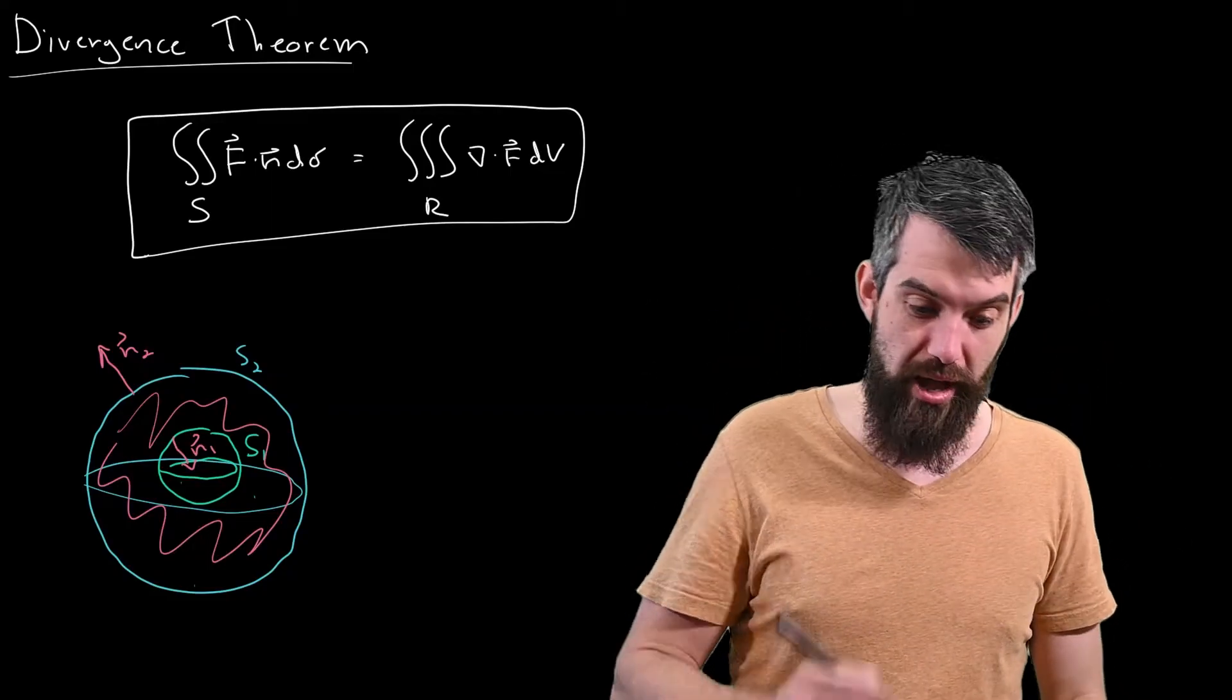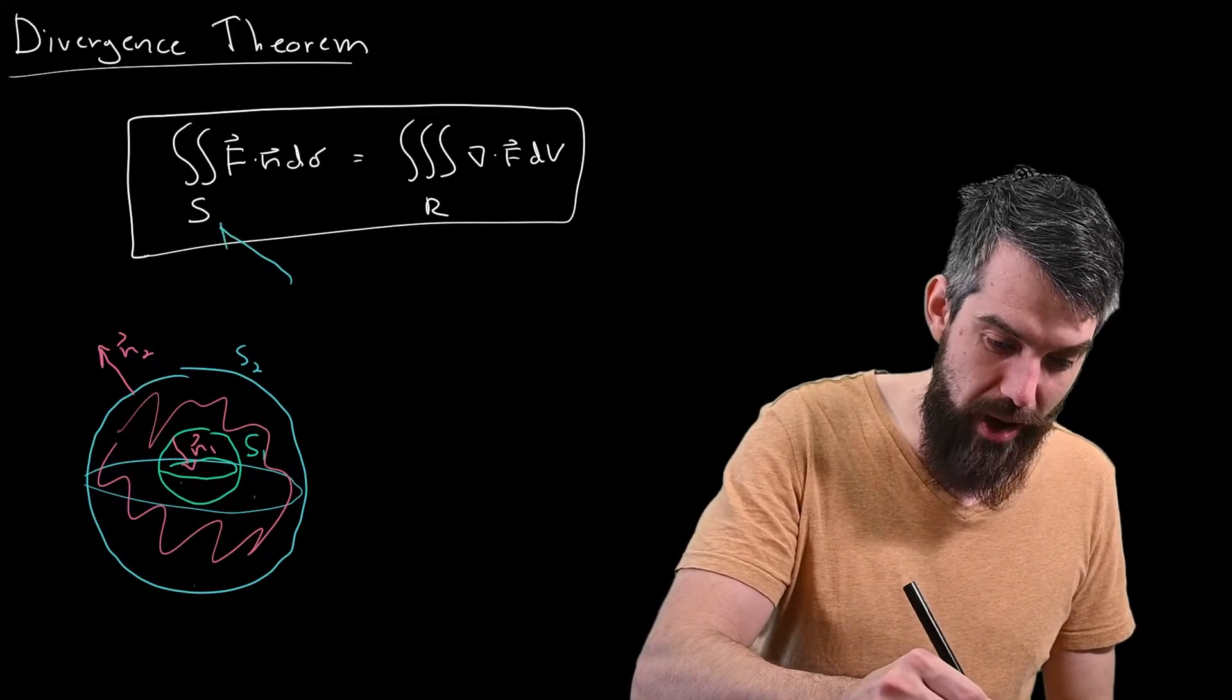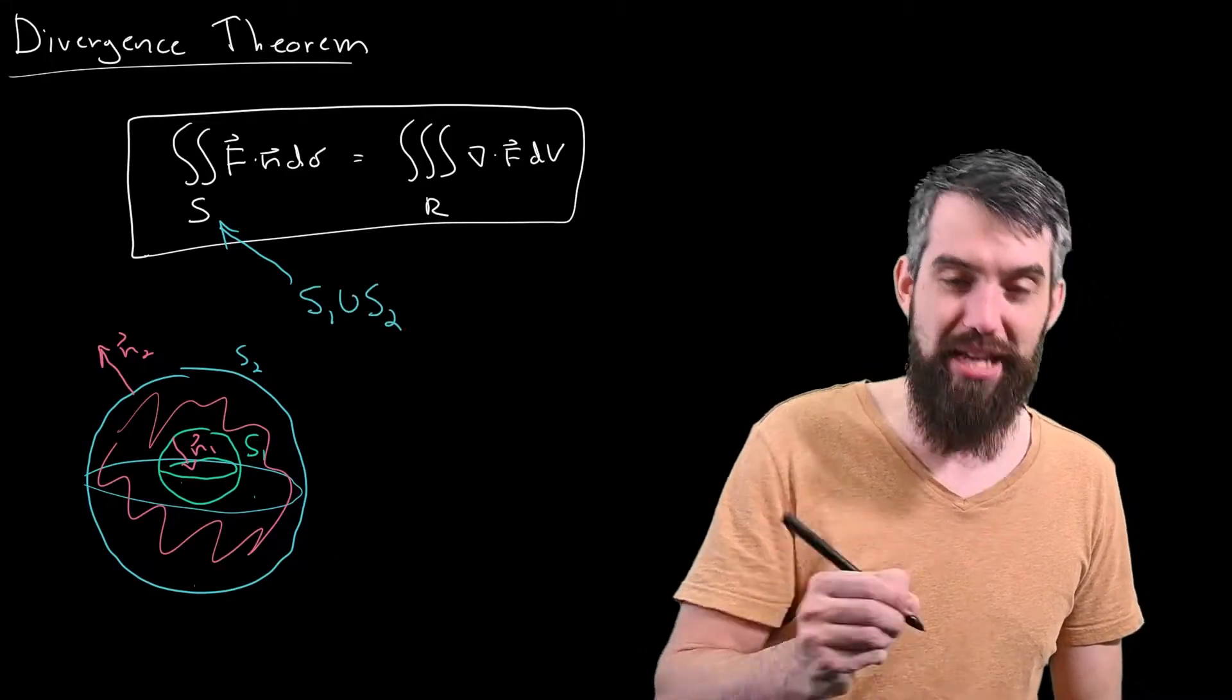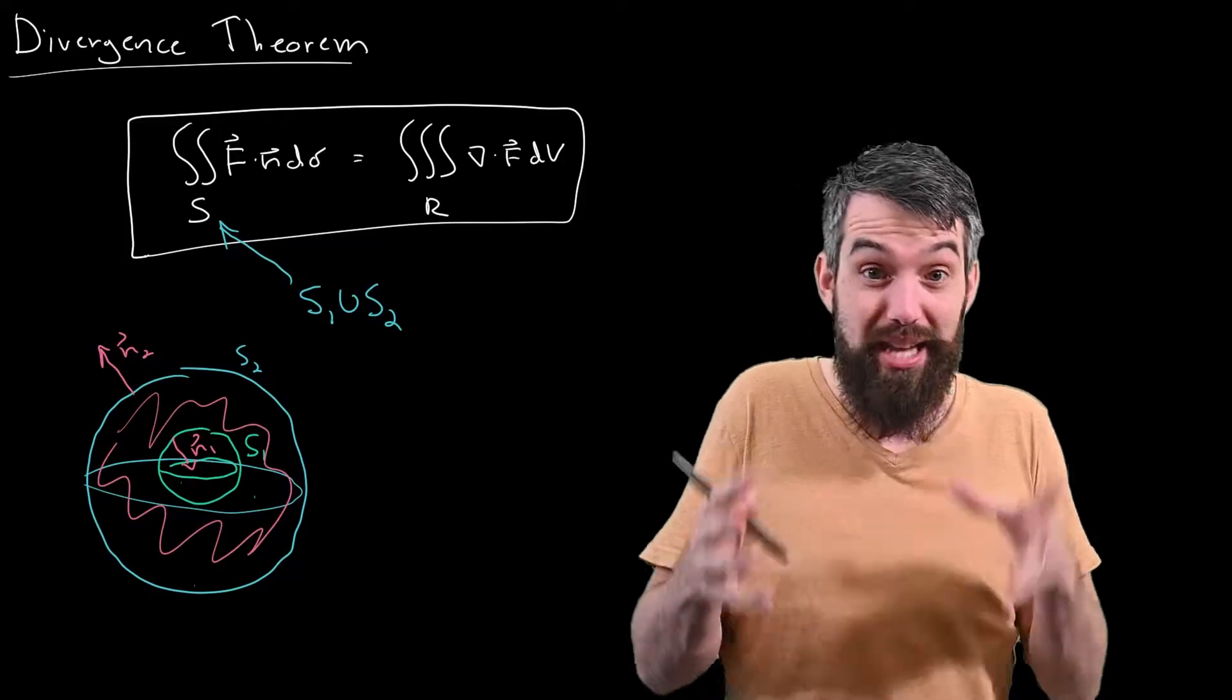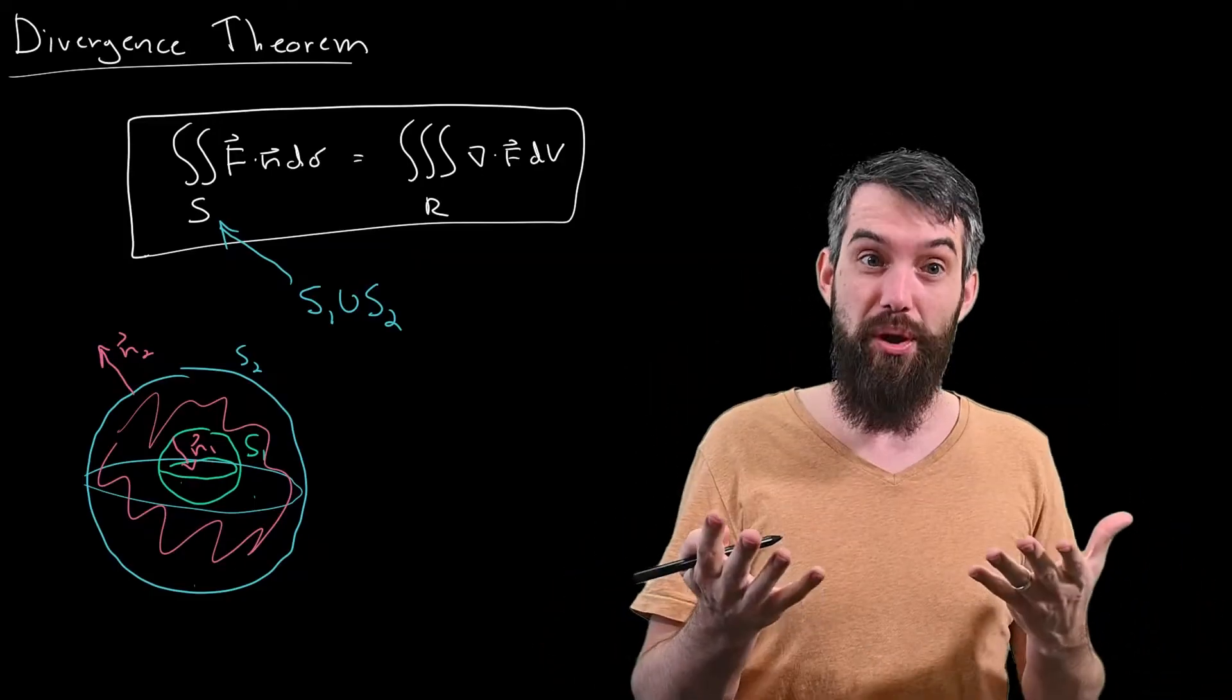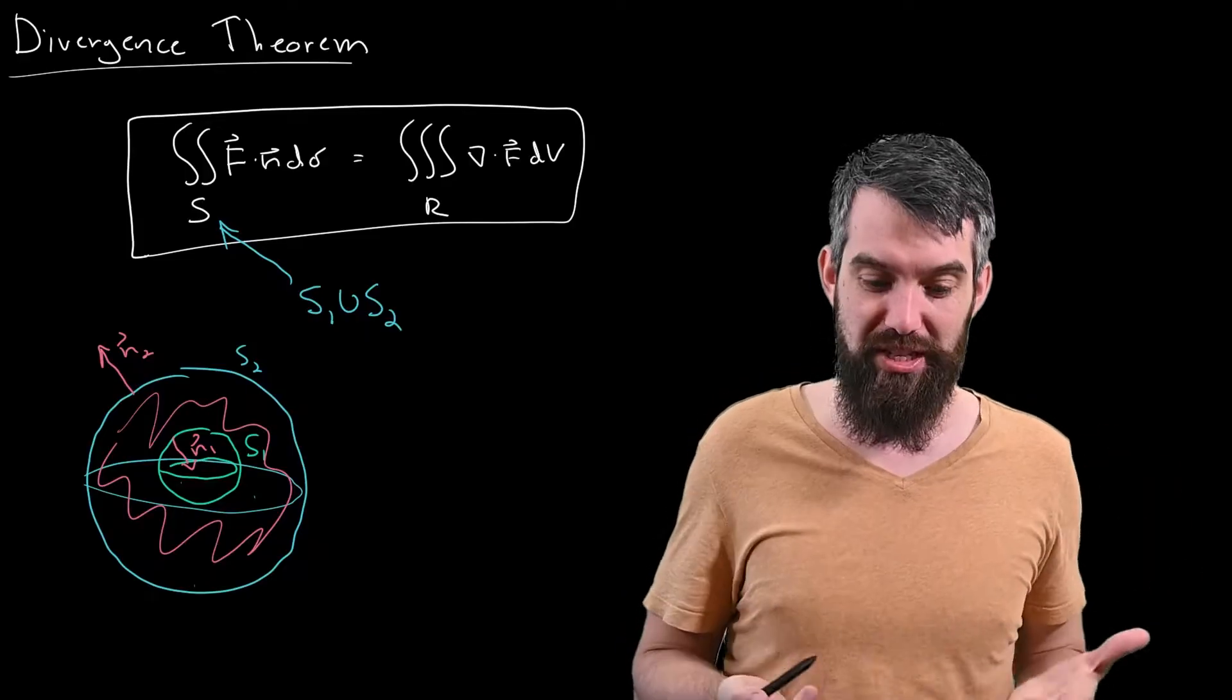Now, if I apply that here, the surface that I'm talking about is really an S1 union S2. There's two surfaces here, an inside one and an outside one. So the flux across the surface in general is going to be the sum of these two things.